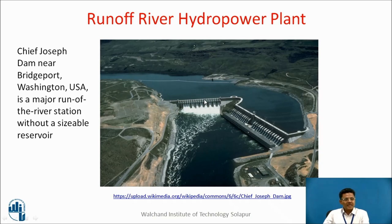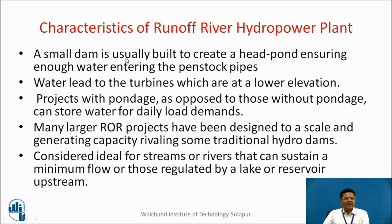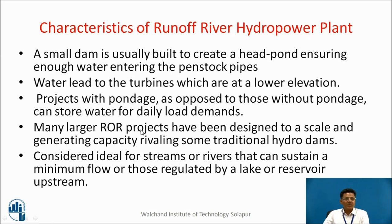Now let us discuss in detail about the runoff river plant. The characteristics of a runoff river plant can be summarized as follows: a small dam is usually built to create a head pond ensuring enough water entering the penstock pipes. Water is led to the turbines at lower elevation. Projects with pondage, as opposed to those without, can store water for daily load demands. Many larger runoff river plant projects are now designed at a scale where their generation capacity is comparable to traditional hydro dams.